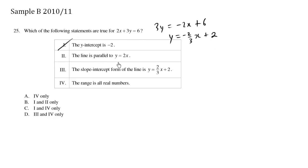The line is parallel to y equals 2x. Now here, the line y equals 2x is the same thing as y equals 2x plus 0. And according to this, the slope is 2 and the y-intercept is 0. So the slope here is 2, which is a different slope than here, so this is incorrect.